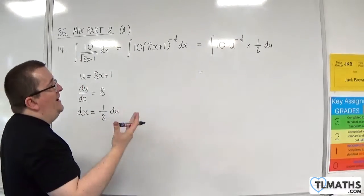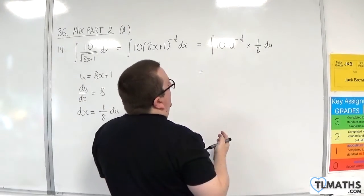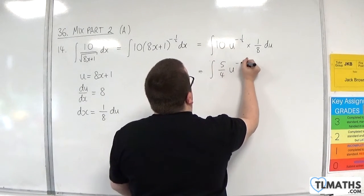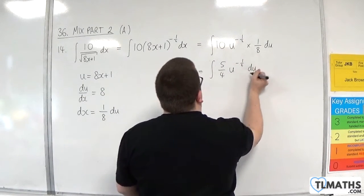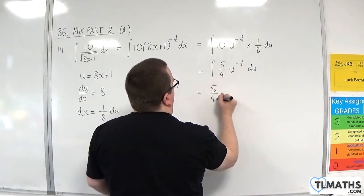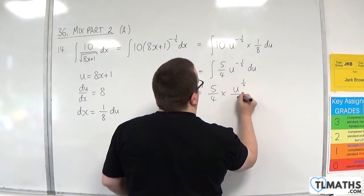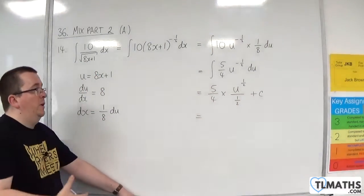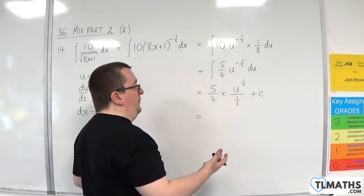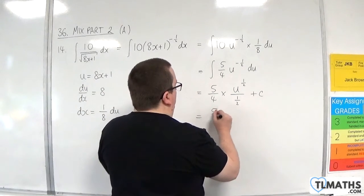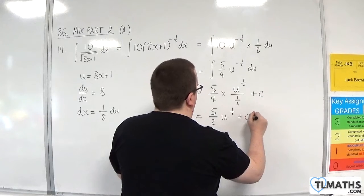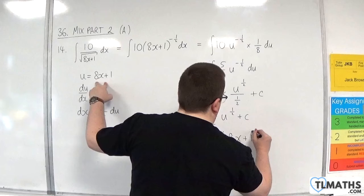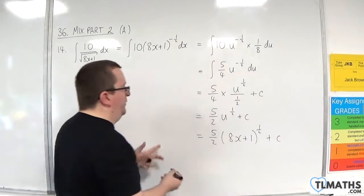So you can see we've got the 10 eighths. Now 10 eighths is 5 quarters. So we've got the integral of 5 quarters times u to the minus one half du. Now add 1 to the power, divide by the new power, plus a constant c. Divided by half is the same as multiplying by 2. 5 quarters times 2 is 10 quarters, which is 5 halves. So we'll have 5 halves, u to the half, plus c. Which is 5 halves times (8x + 1) to the half, plus your constant c.